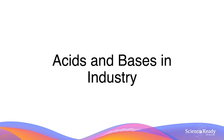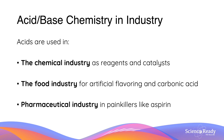In this video, we'll be talking about acids and bases in the industry. So what are acids and bases used for in industry? Well, acids are used in the chemical industry, mostly as reagents and catalysts. They're also used in the food industry for artificial flavouring and carbonic acids, and in the pharmaceutical industry in painkillers like aspirin.